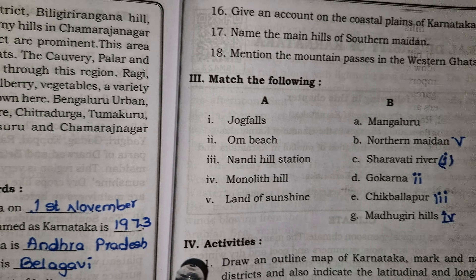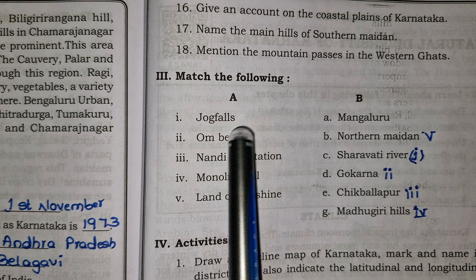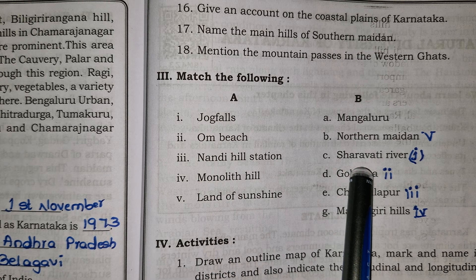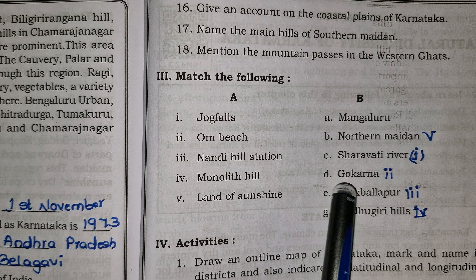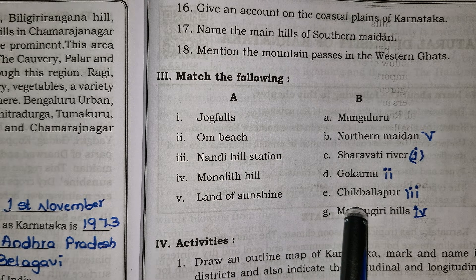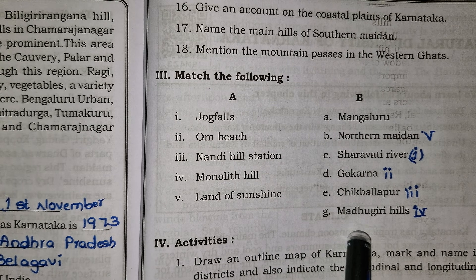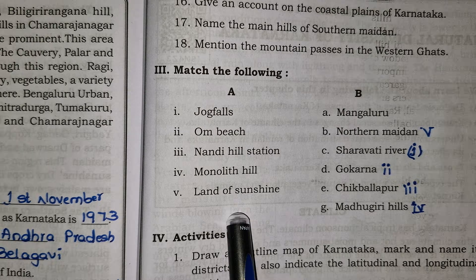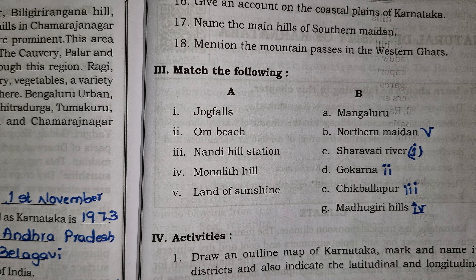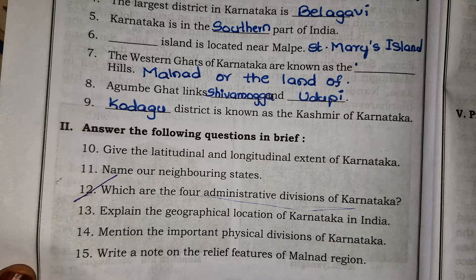Next is the match the following exercise from the textbook: Jog Falls – Sharavati River; Om Beach – Gokarna; Nandi Hills – Chikkaballapur; Monolith Hill – Madugiri Hills; Land of Sunshine – Northern Maidan.